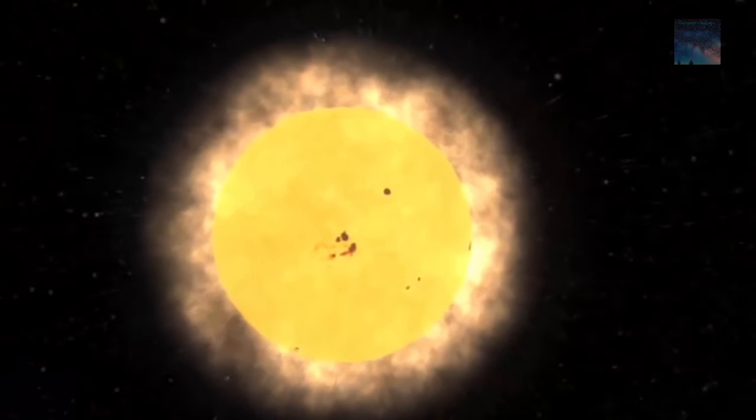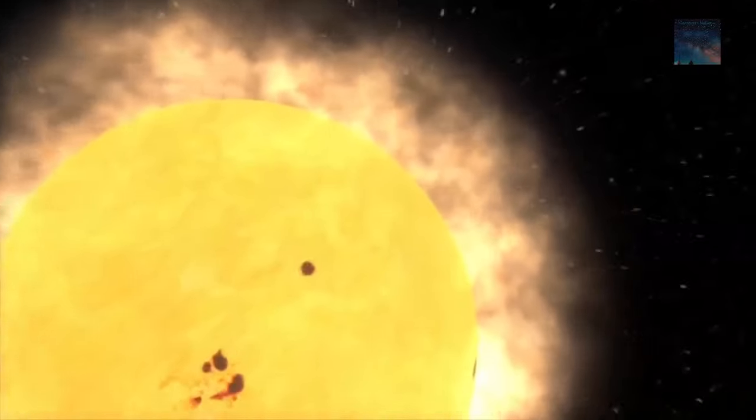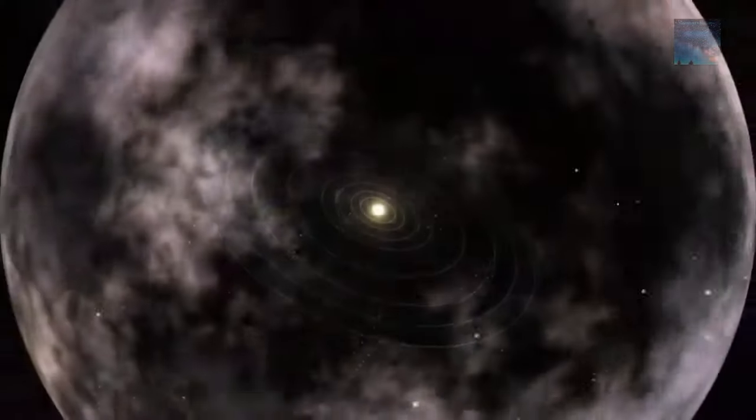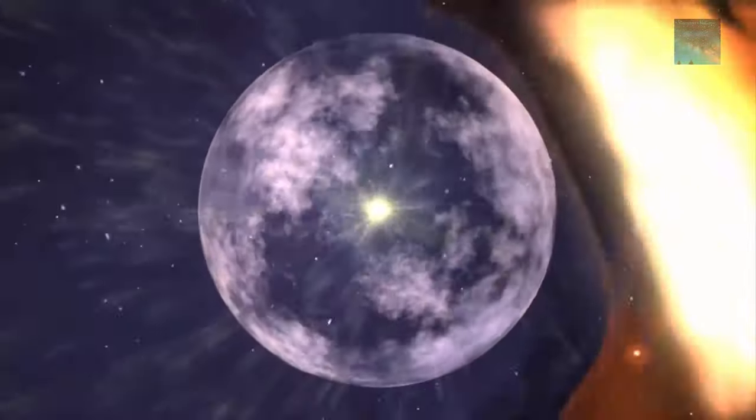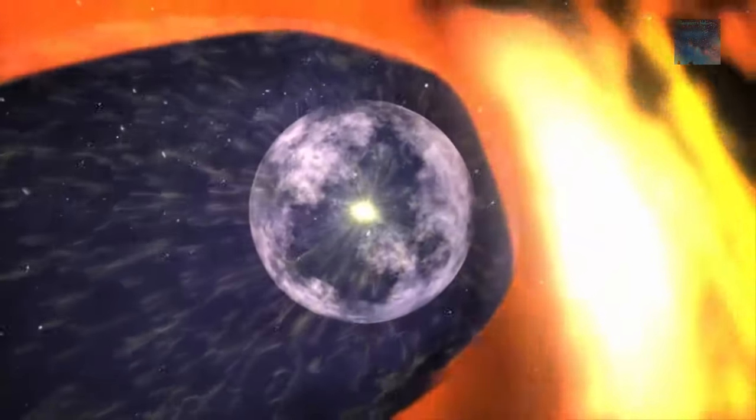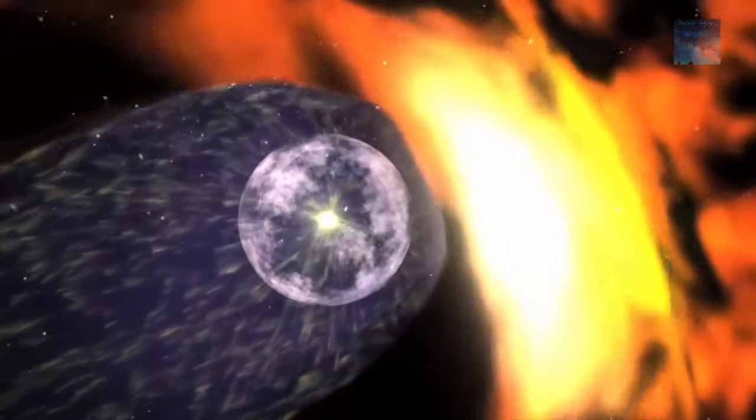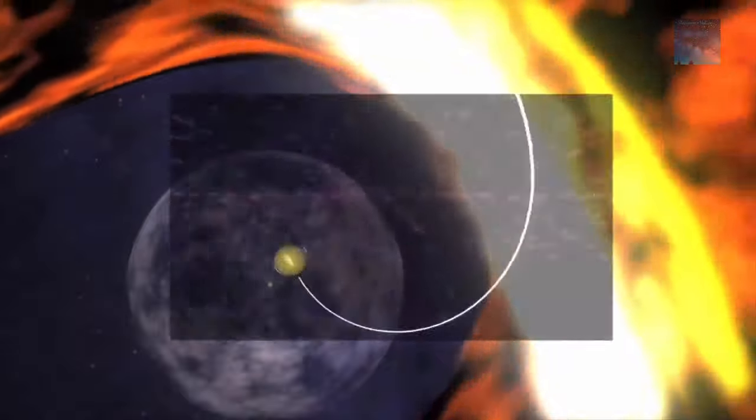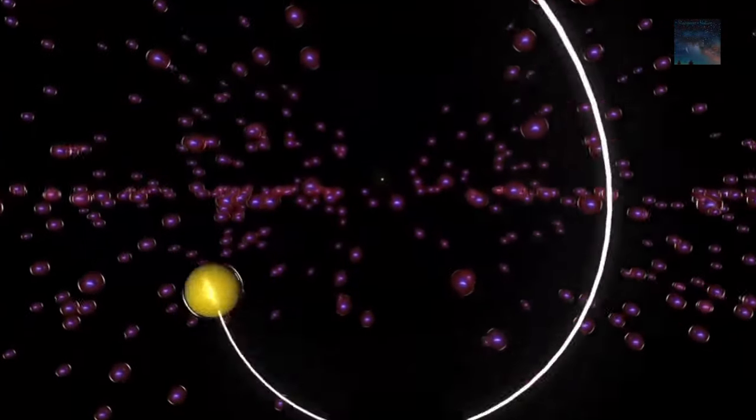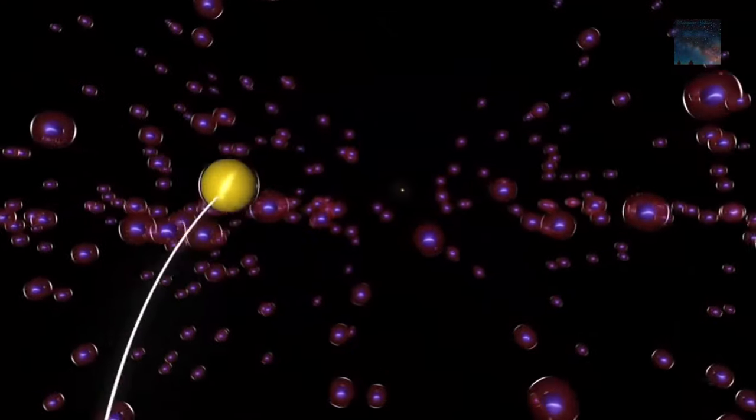Two years later, the spacecraft detected the first sign of the aftermath. Solar wind particles from the 2014 pressure increase had reached the edge of the heliosphere, neutralized themselves, and shot all the way back to Earth, and they had a story to tell.